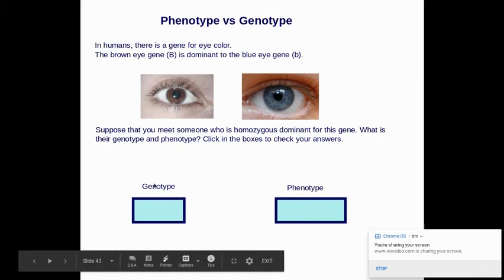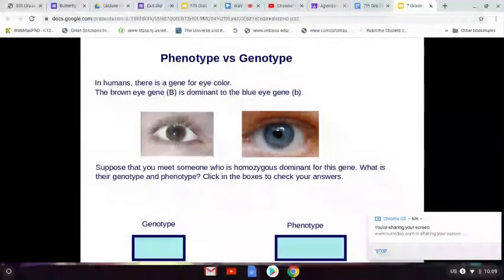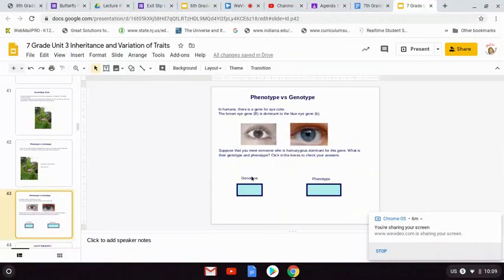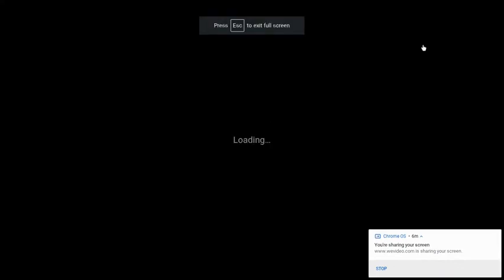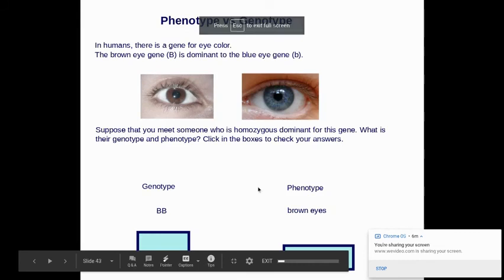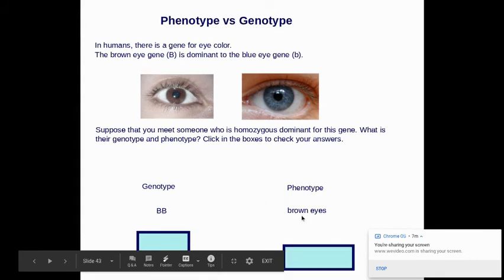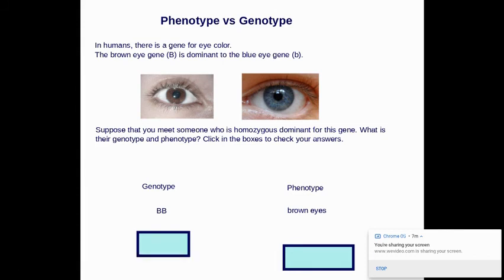So phenotype means what would their eyes look like? Will they be brown or blue? What would their genotype be? Will they be big B, big B, big B, little b, or little b, little b? And the answers are if they are homozygous dominant, it's going to be homozygous means two of the same. Dominant means two capital. So they're big B, big B. And if they are big B, big B, then the phenotype, what they're going to look like is going to be brown because brown is dominant.